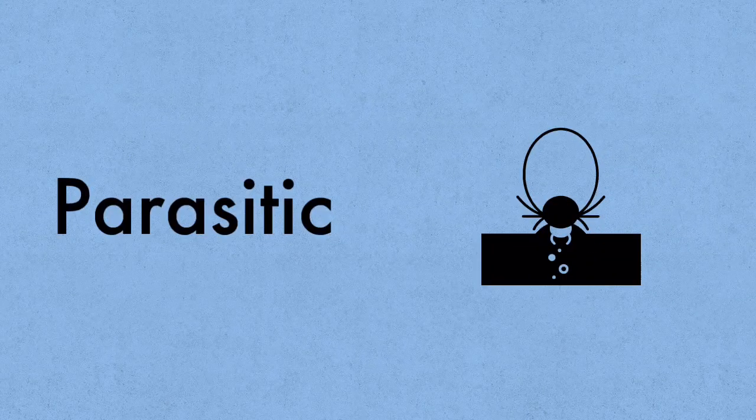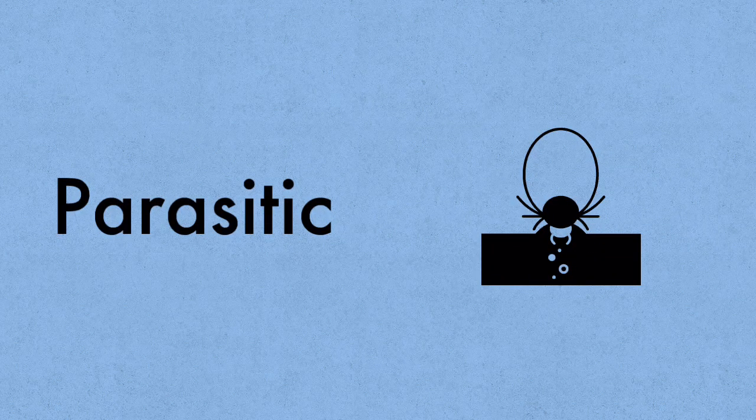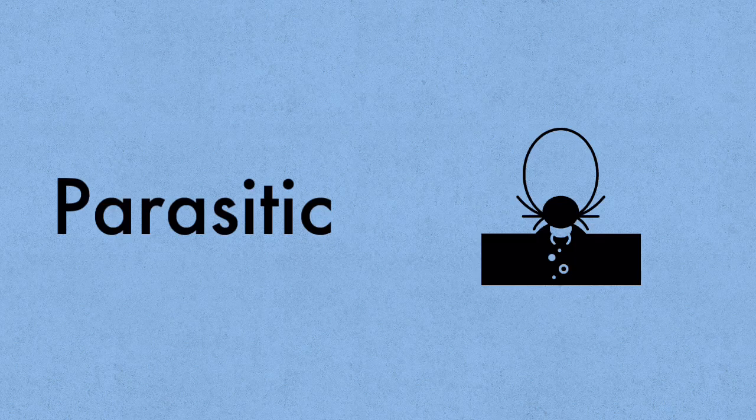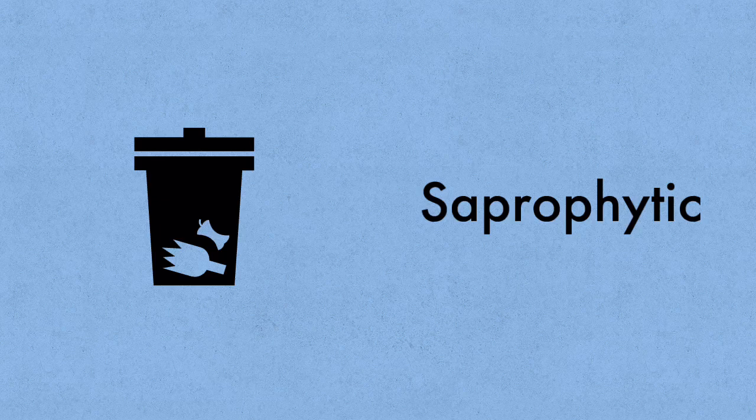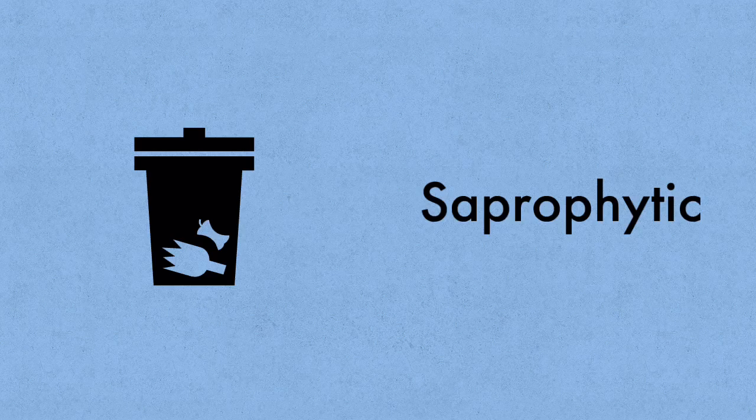Therefore, fungi are heterotrophic. They cannot make their own food, they have to take in their food from another outside source. Some fungi are parasites or parasitic, they basically get their food from a living host and they usually cause it harm. If they are not parasites then they're saprophytic, meaning that they feed off dead organic matter. They're acting as decomposers and they play a vital role in returning nutrients to the soil.